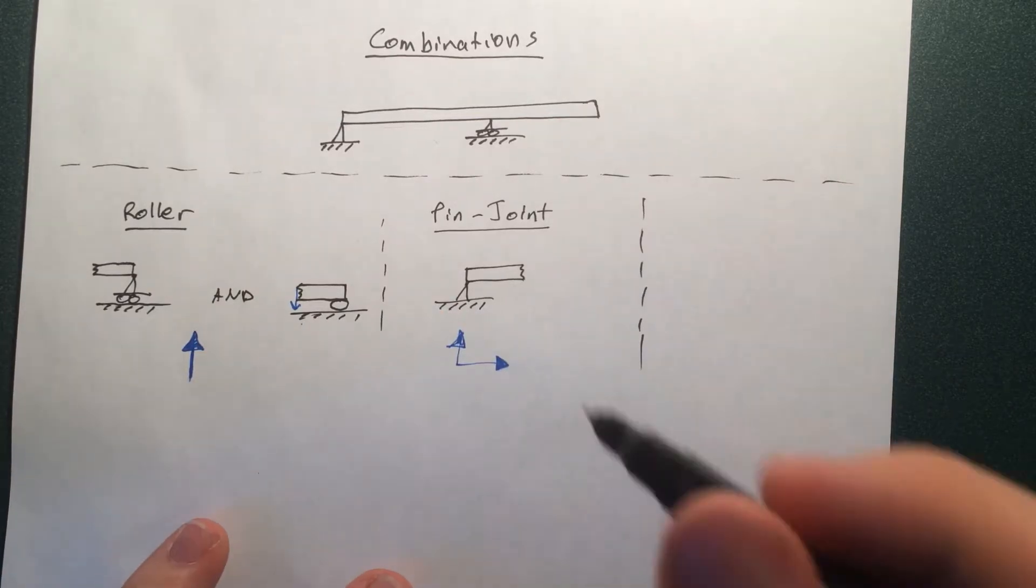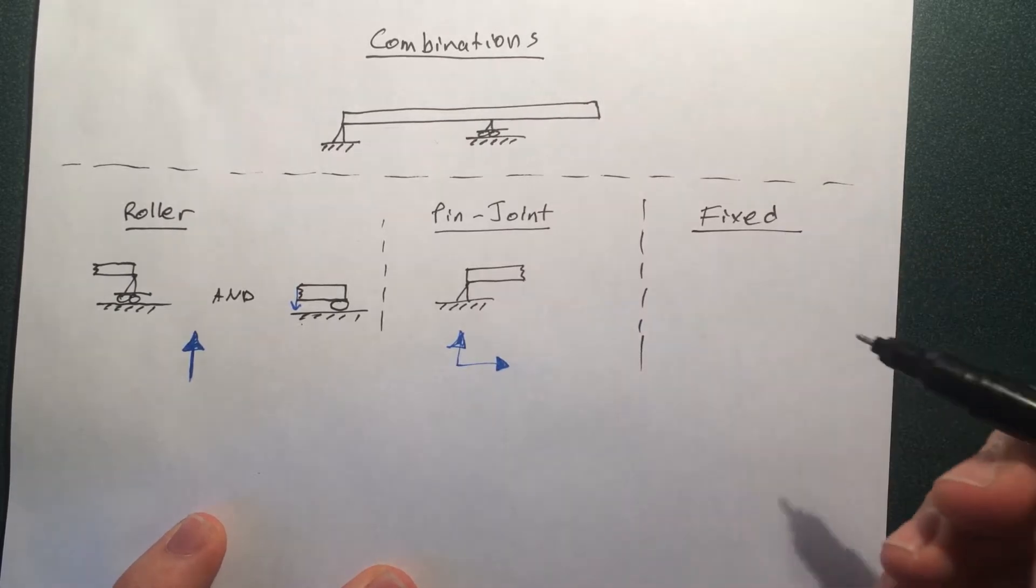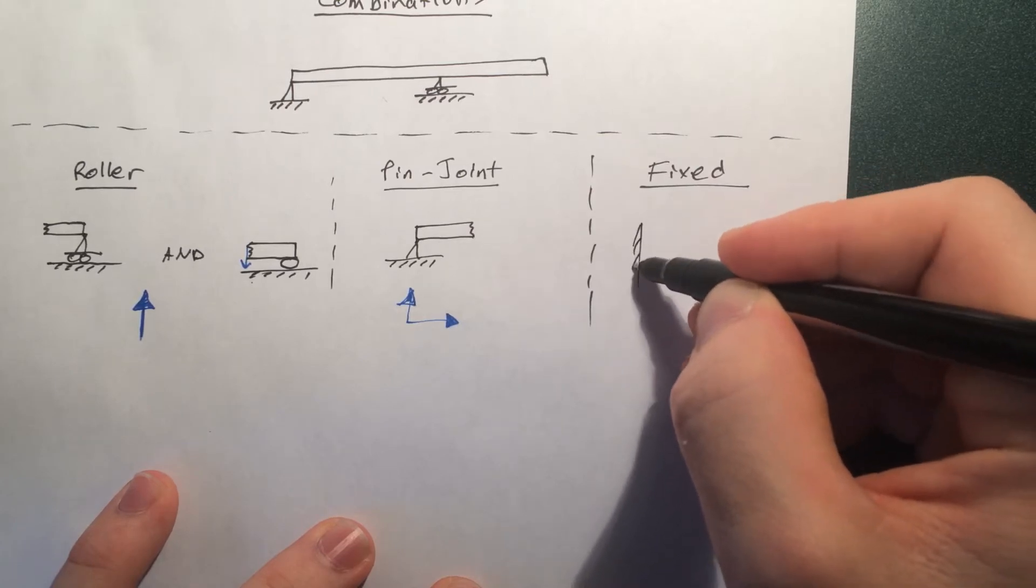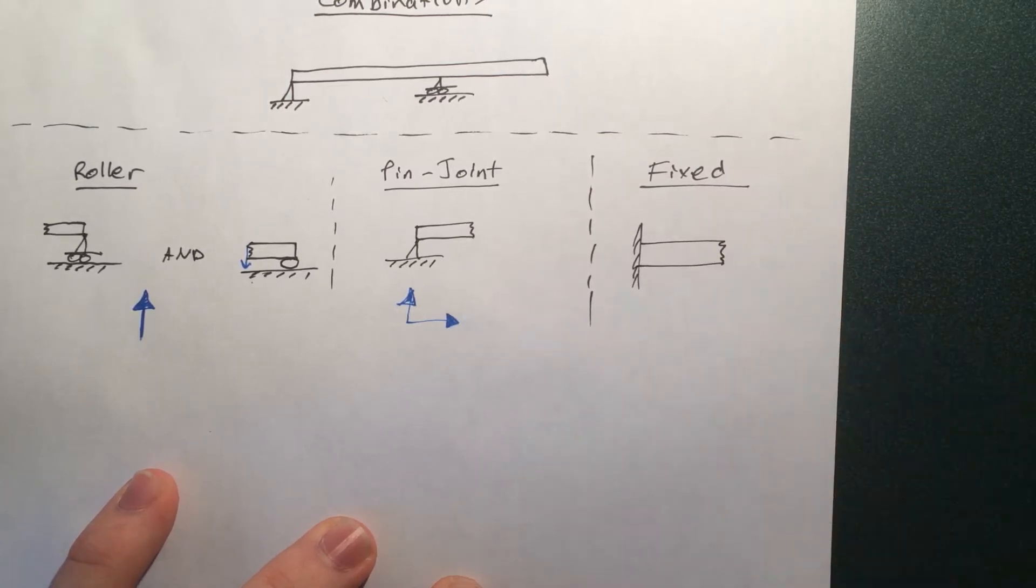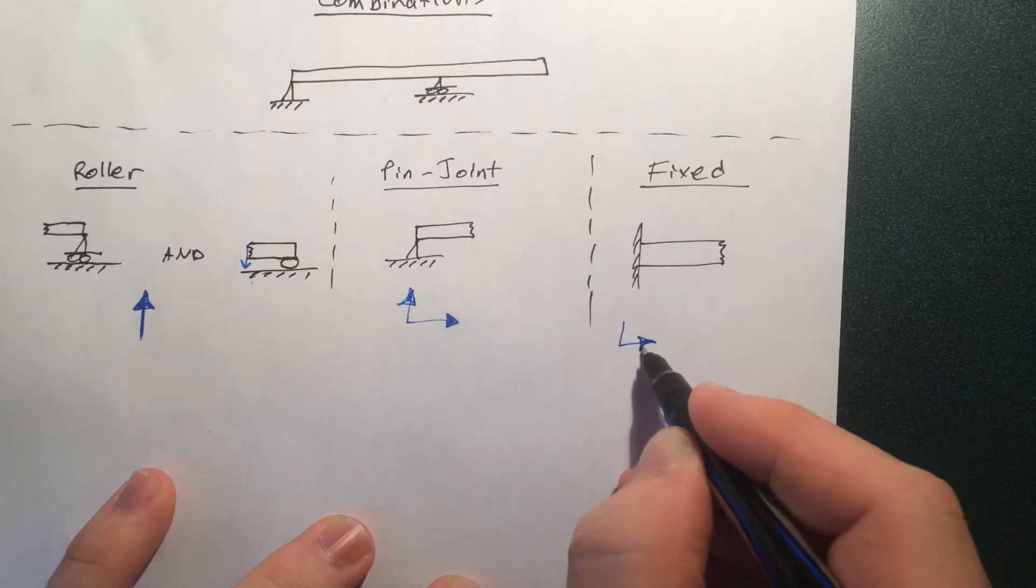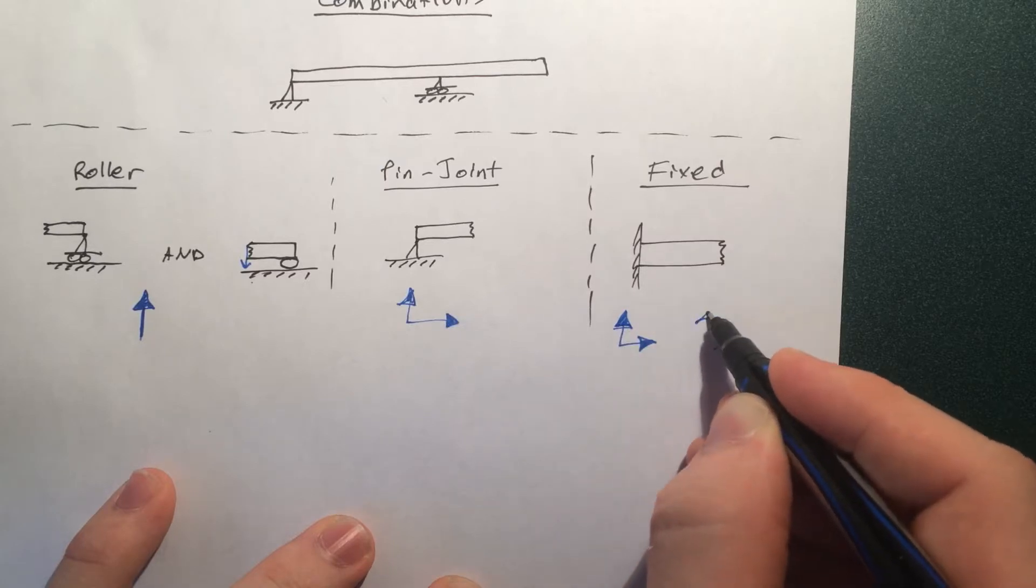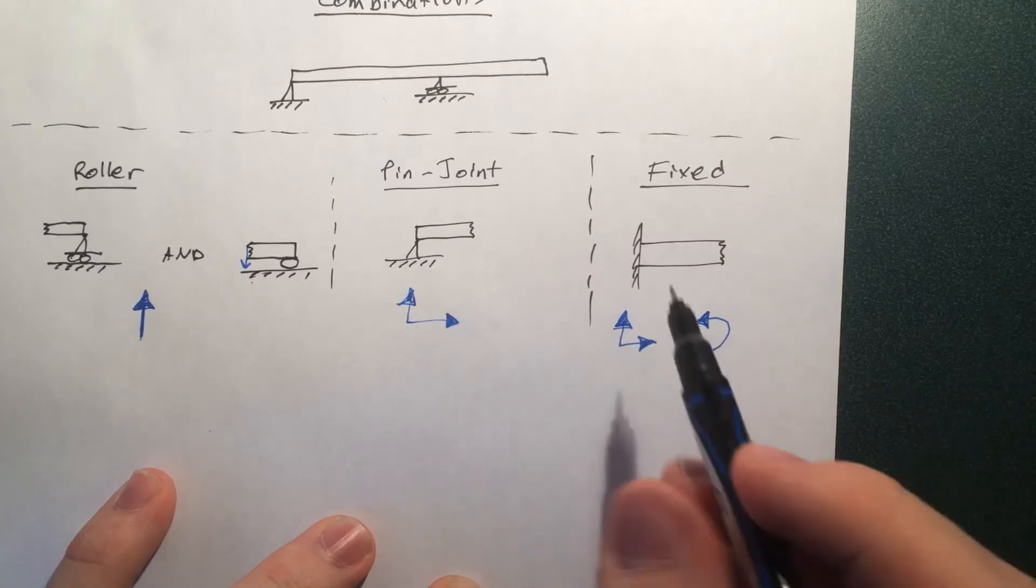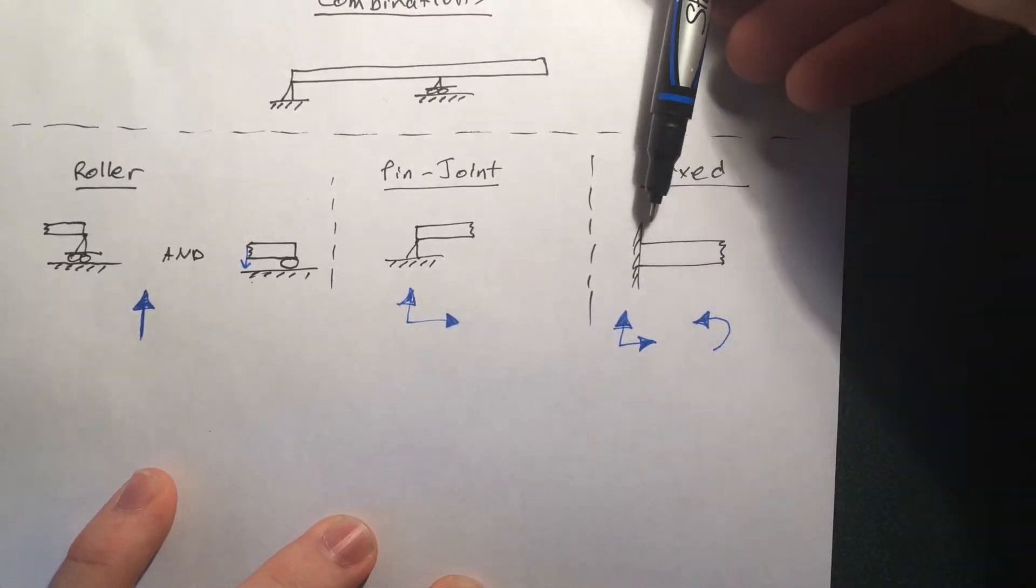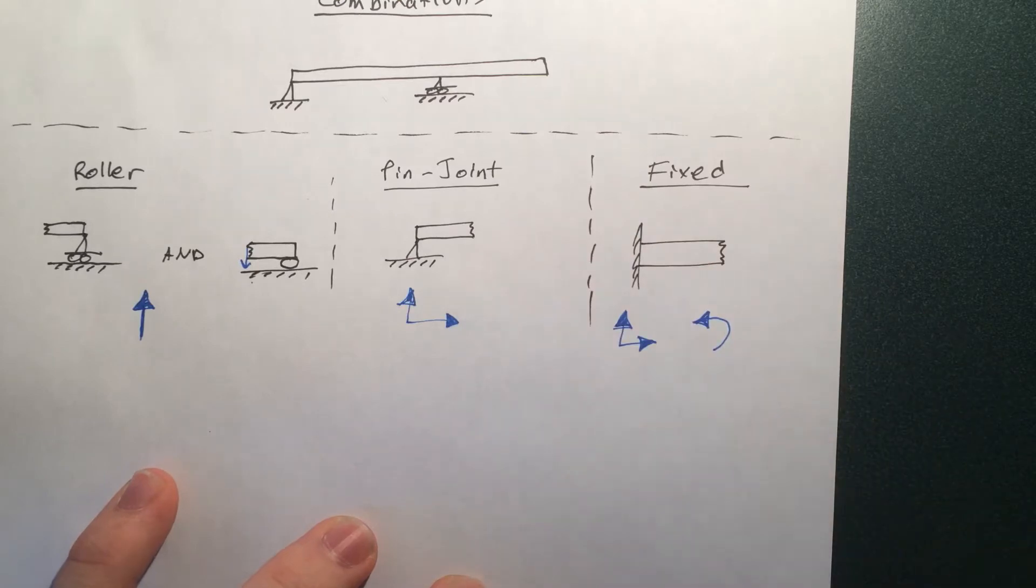The final joint, you might have guessed, is the fixed joint. And that's like what we have here with the cantilever beam. And this one resists forces and it resists moments. Because you put a force, it's going to push back, up and down, it's going to resist. And if you twist it, it's going to resist because it's embedded in the wall.